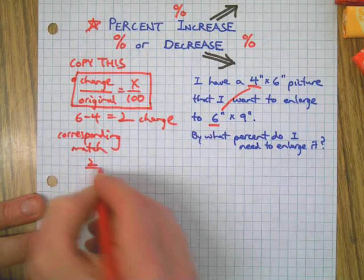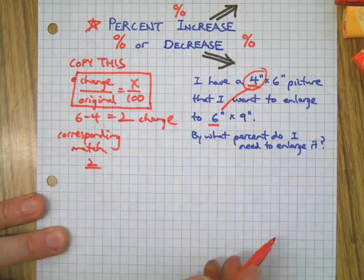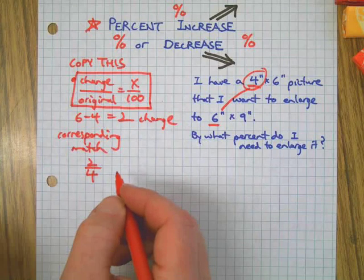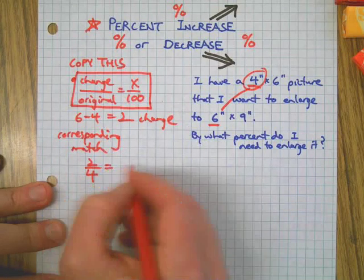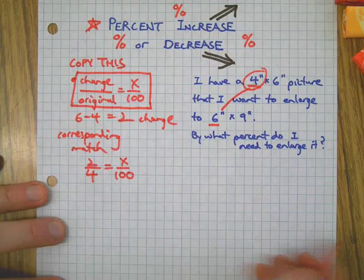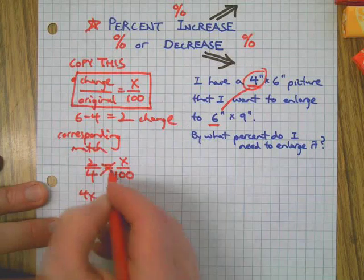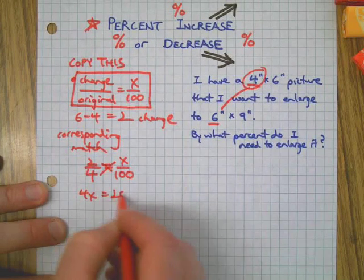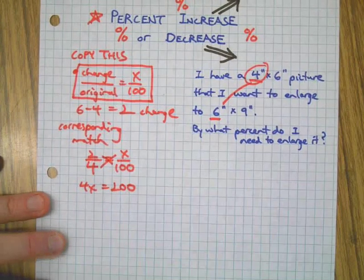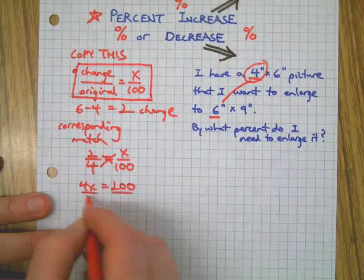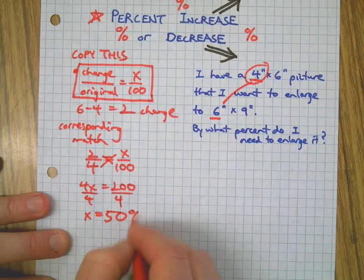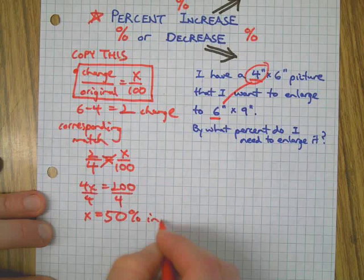I'm going to just fill in the blanks on that little formula, that proportion. The change is two, the original is four. It's important to recognize the original in these word problems. There's our proportion all set up. We can cross multiply: four times x, two times 100. I'm modeling for you, establishing an algorithm you can trust when you don't already know the answer. There's a 50 percent increase.